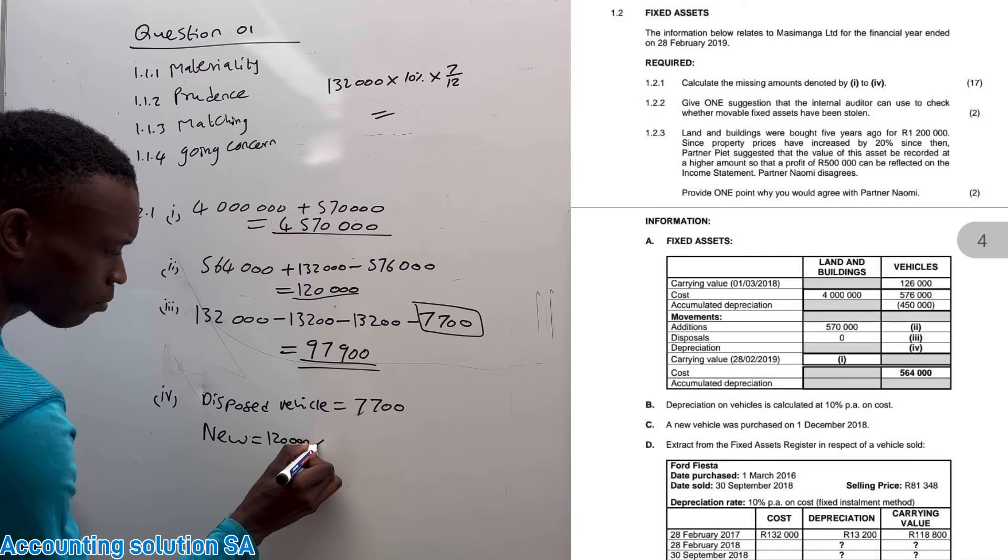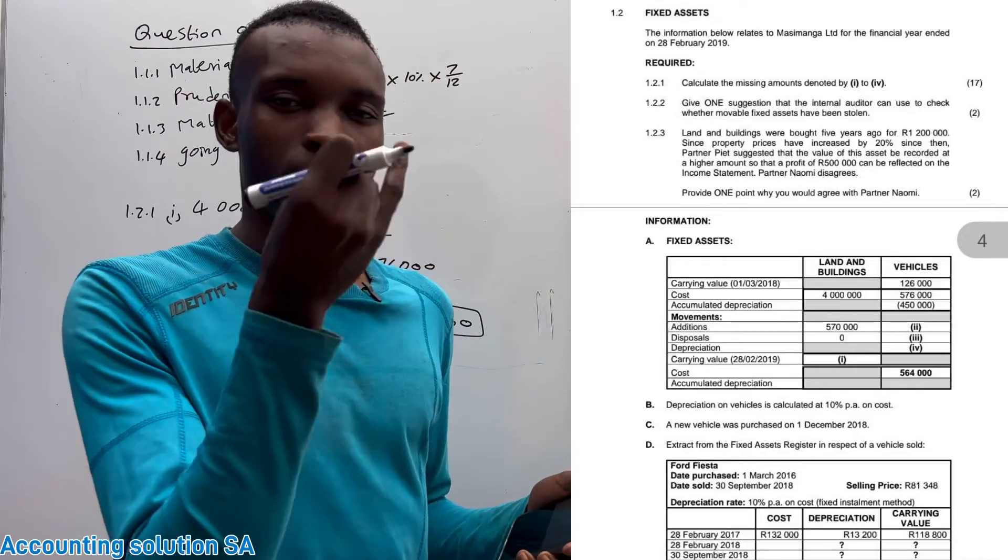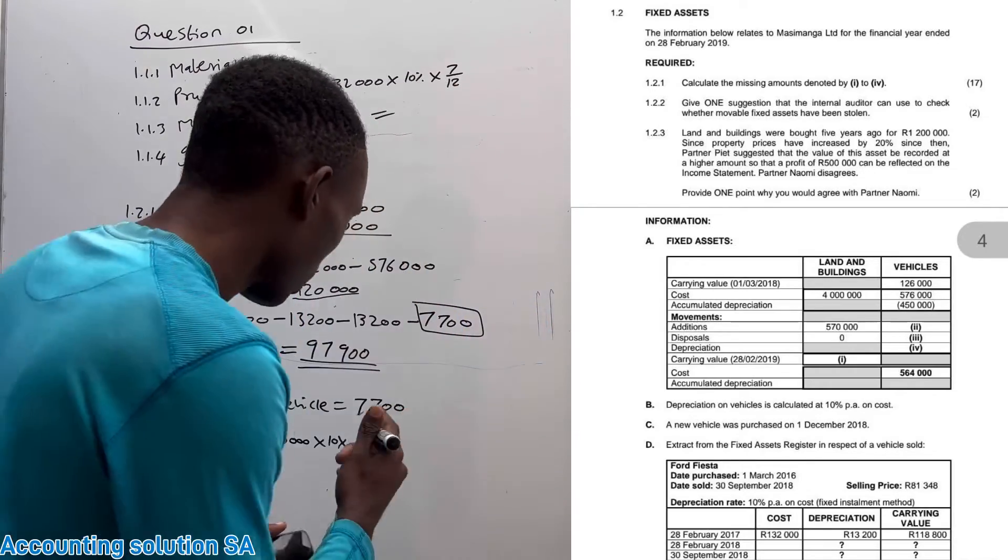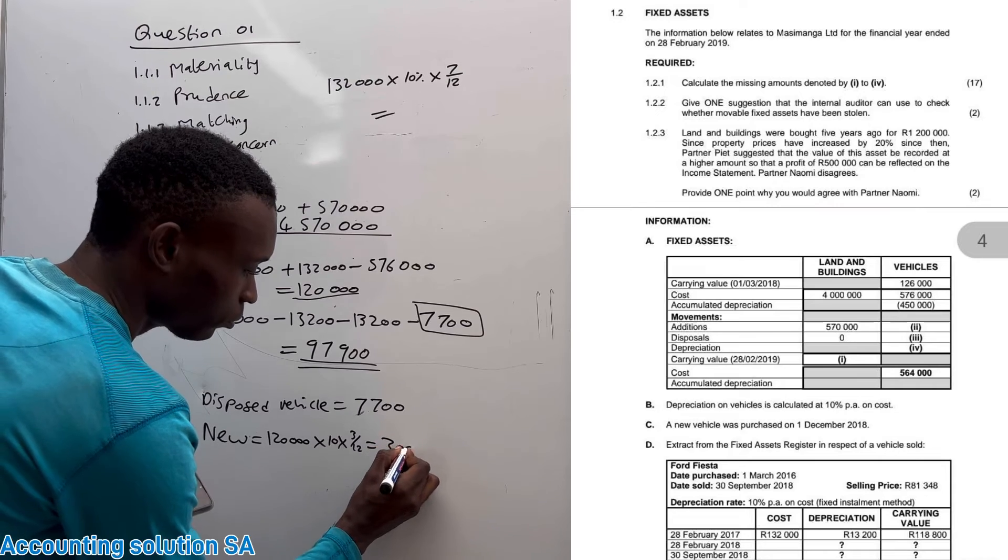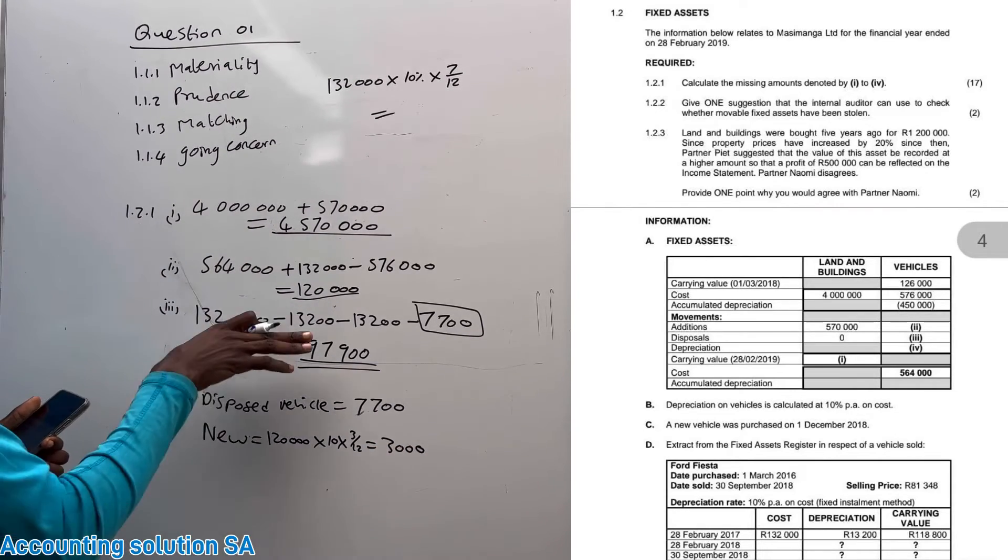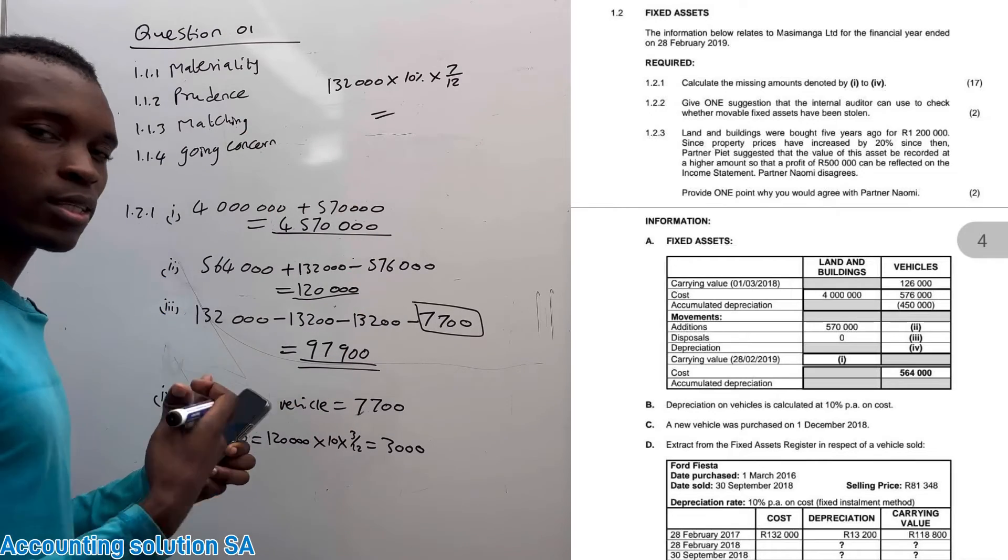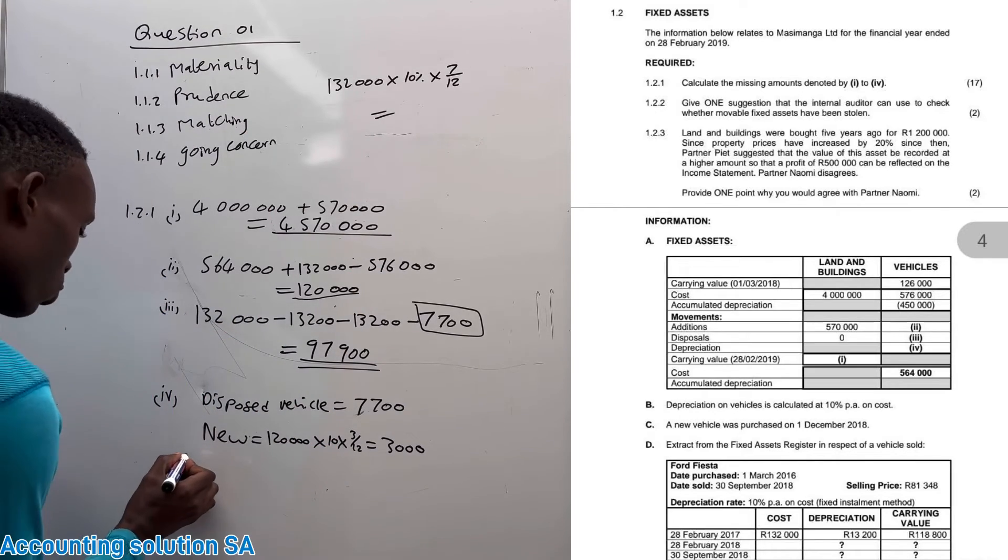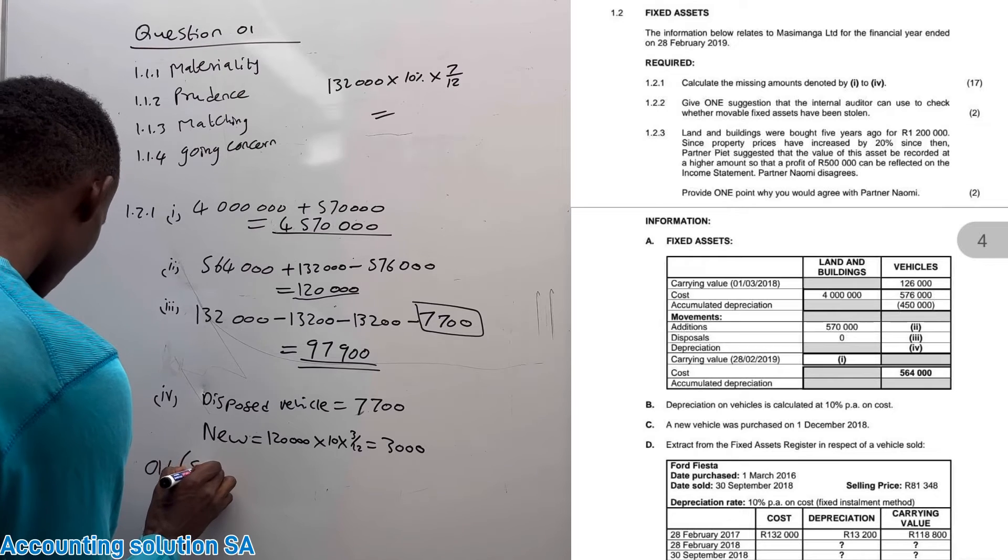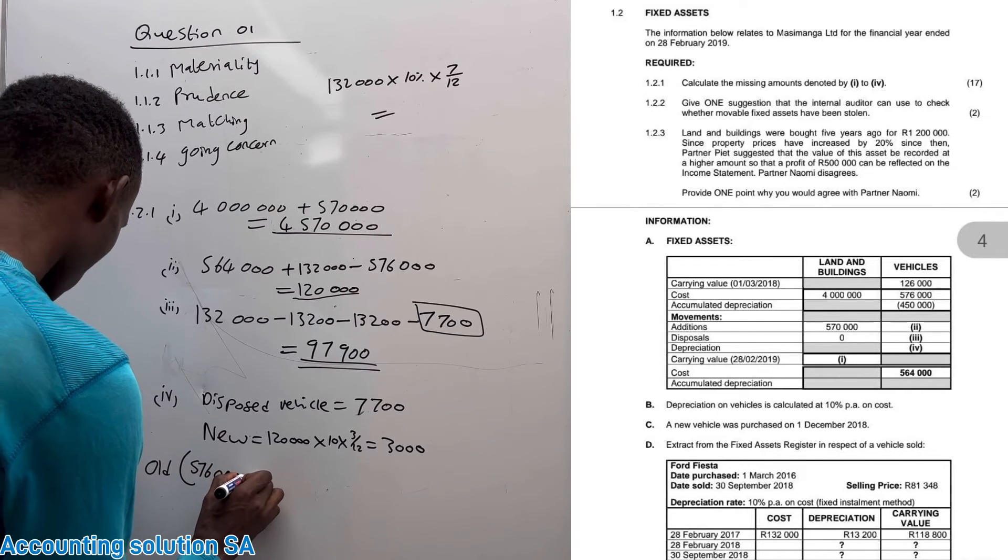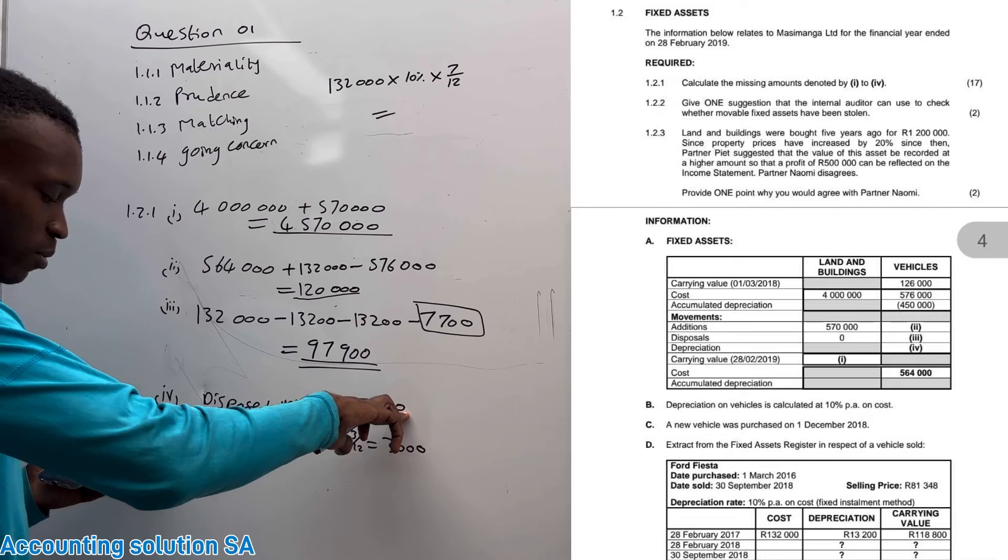After that we need to calculate for the new one. Remember we bought a new one of R120,000, which means we're going to say R120,000 multiplied by 10%, but we need to count the months. It was purchased on 1 December: December, January, February, we used it for three months, multiplied by 3 over 12, then we will get an amount of R3,000. Remember, besides all these we have the balance, the remaining balance. We have other vehicles that they didn't talk about.